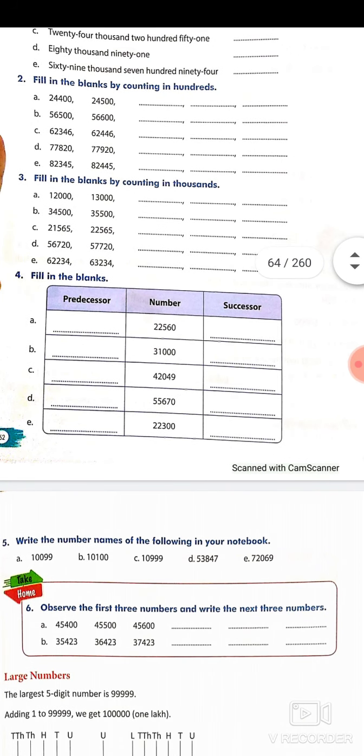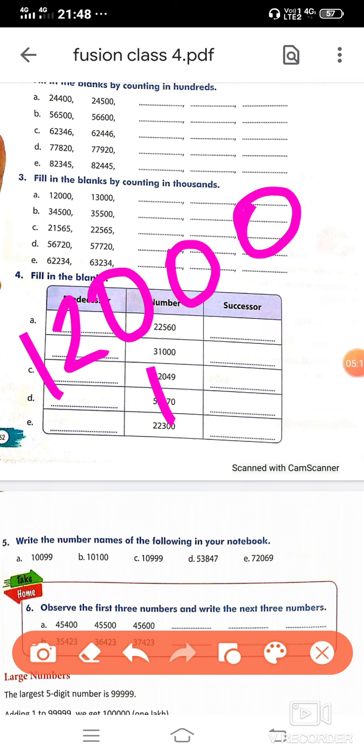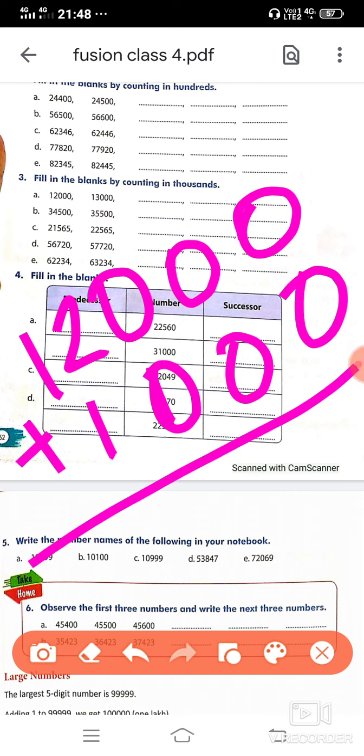After that you will fill in the blanks by counting in 1,000. First we did 100 plus, now we have to do 1,000 plus. 1,000 will be added. So first we had 12,000, then 12,000. In this one we had to do 1,000 plus.